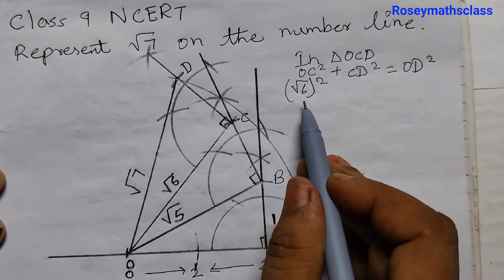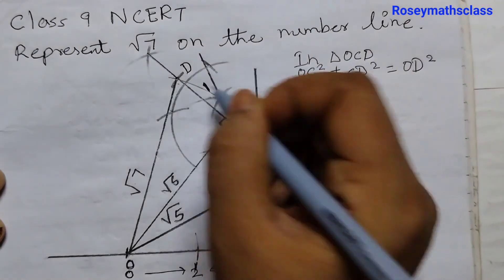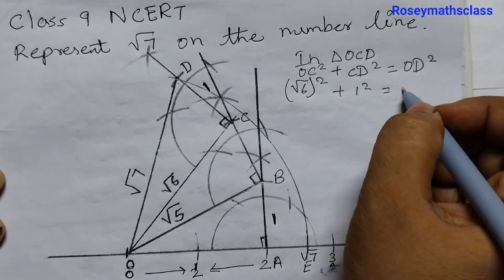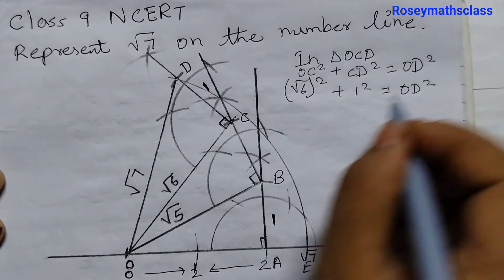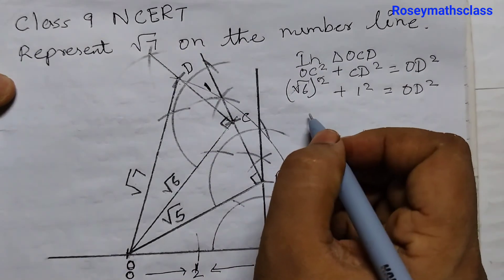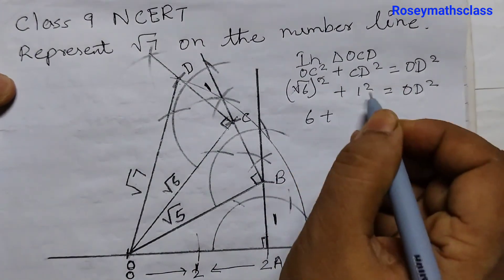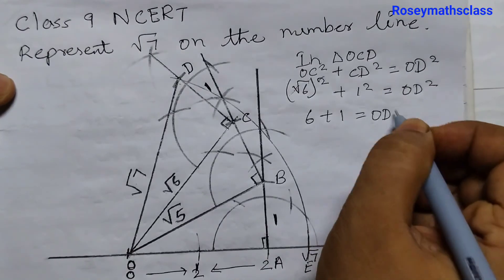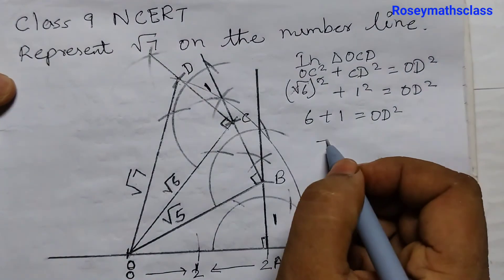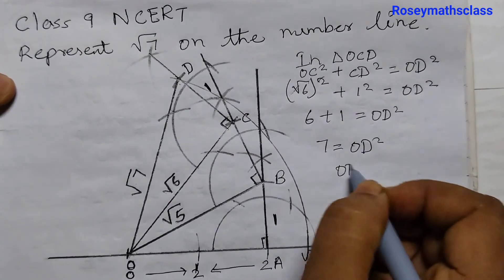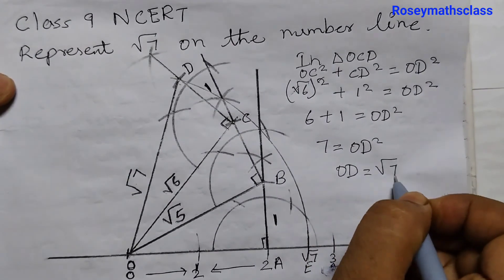Square root of 6 squared. This is 1 unit plus 1 squared is equal to O, D squared. Square root of 6 squared. So this two would cancel out. We are left with 6 plus 1 squared is 1 equals to O, D squared. O, D squared or 7 is equal to O, D squared or O, D is equal to square root of 7.